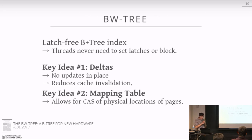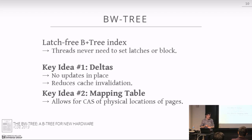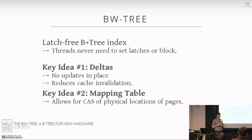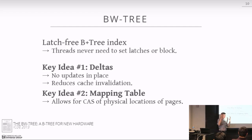The BW tree came out of the Hekaton project from Microsoft Research. We read the Hekaton paper on MVCC — this is the index they developed for it. In the early days at MSR, they considered skip lists, but later decided they could come up with a better structure. What does BW stand for? It's the Buzzword tree — a latch-free index for main memory databases for many cores. That's essentially what it is.